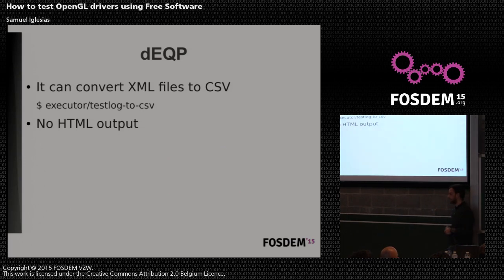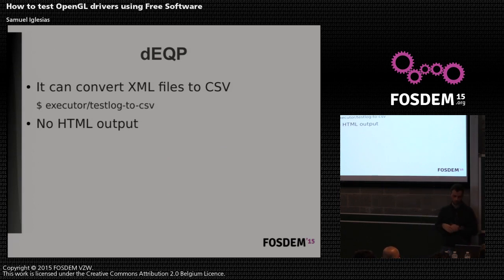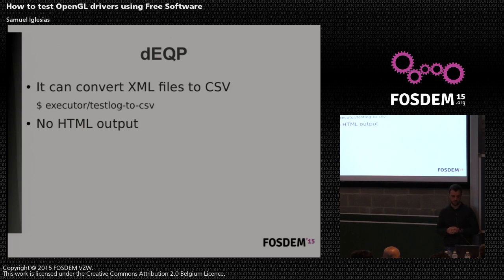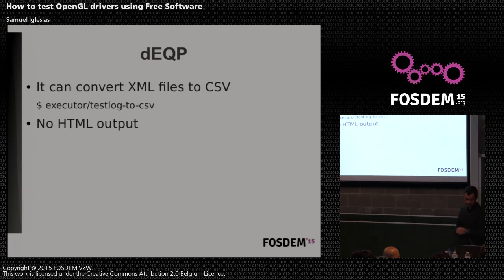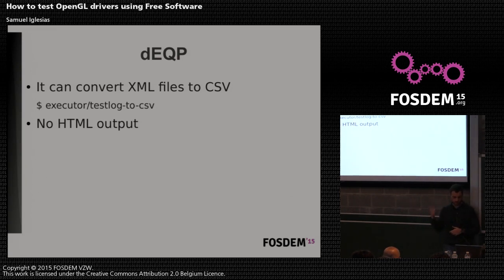The XML files are not always easy to read. If you have a lot of them, you need to parse them to check which tests actually failed. There are some conversion tools — for example, one that converts the XML file to CSV. But there is no HTML output or other more human-readable format. The good thing is that since PigLit added support for running these dEQP tests two months ago, we now have such output available.